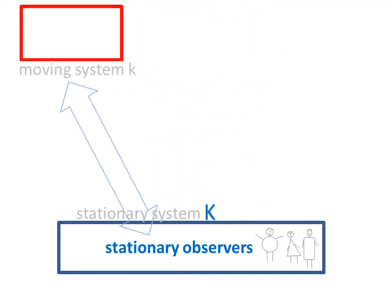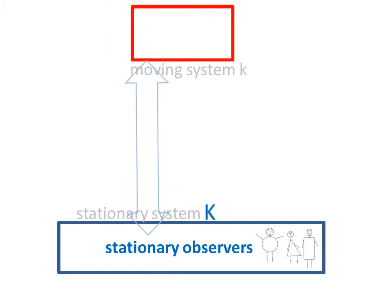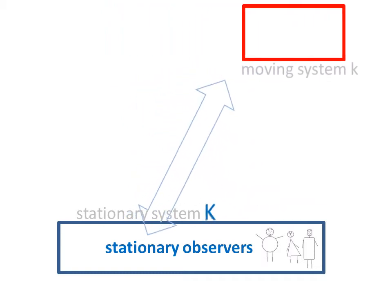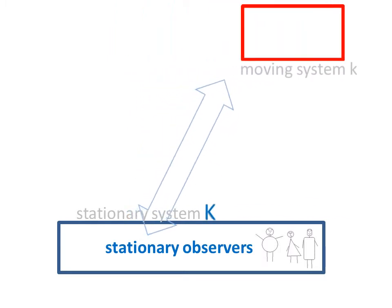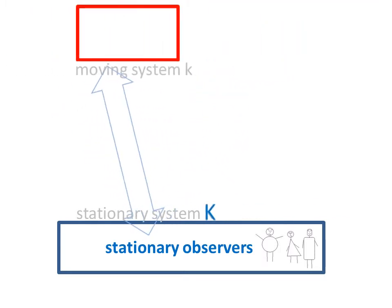It should be clear that no matter what method is to be used, the observers in stationary system, capital K, can only speculate about what is going on in moving system, lowercase k.